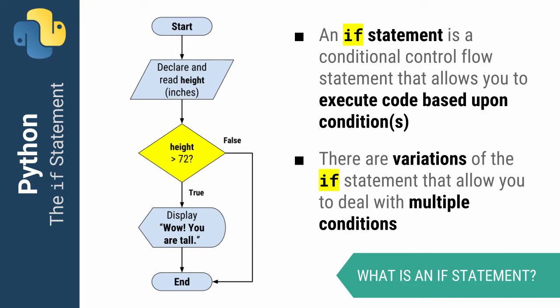Notice the process flow here representing what I want to do in a basic program that checks your height. I want to read the user's height and then check a condition: whether the height is greater than 72. If it is, I'll print 'Wow, you are tall'; otherwise I will do nothing. This is what we mean by conditional logic — we will do something if a condition is true, otherwise we will not.